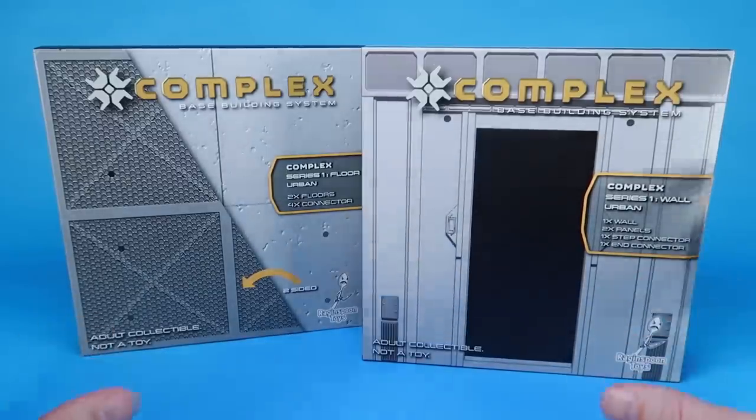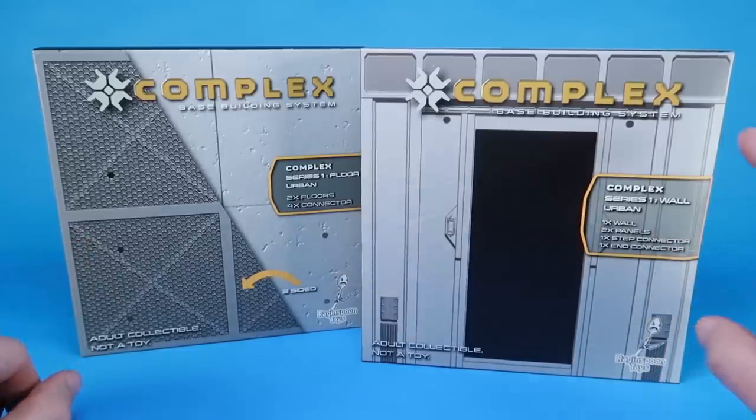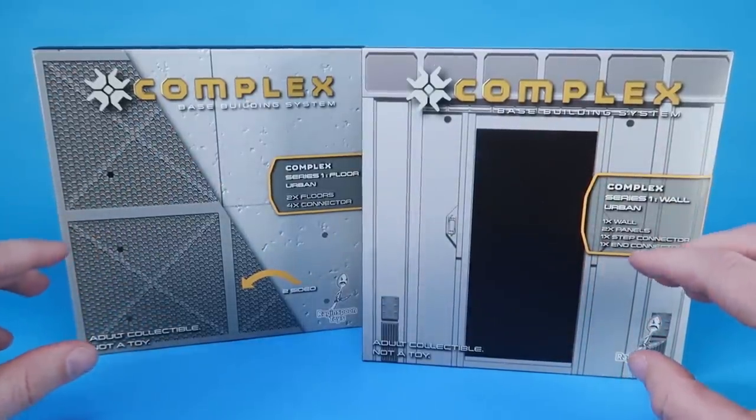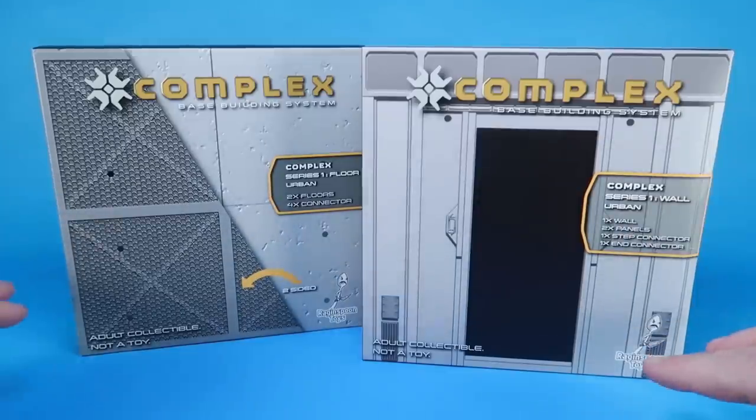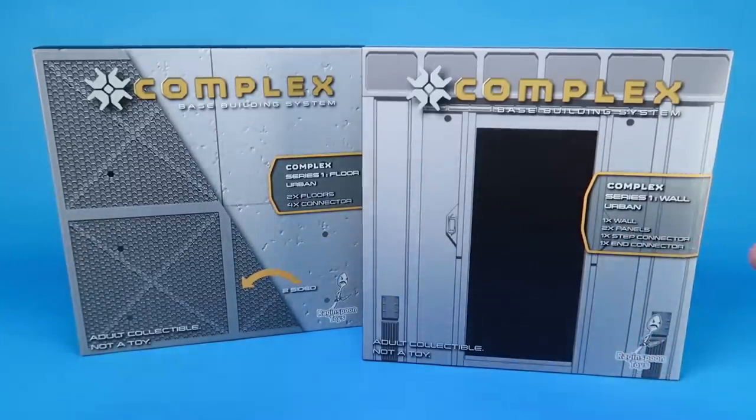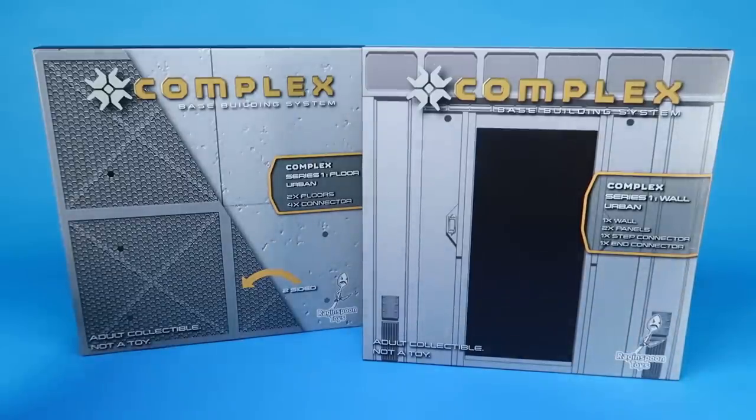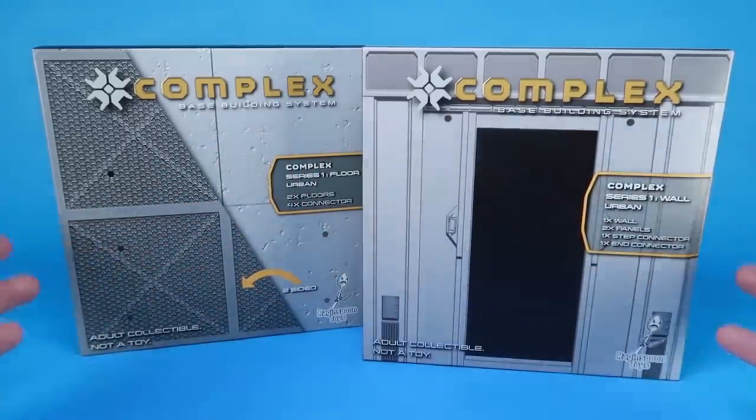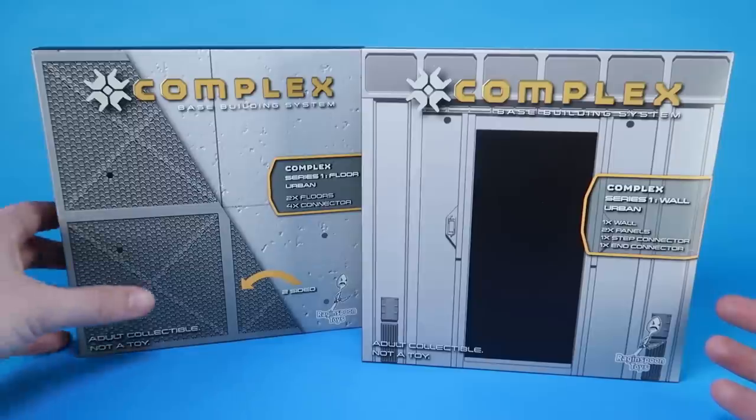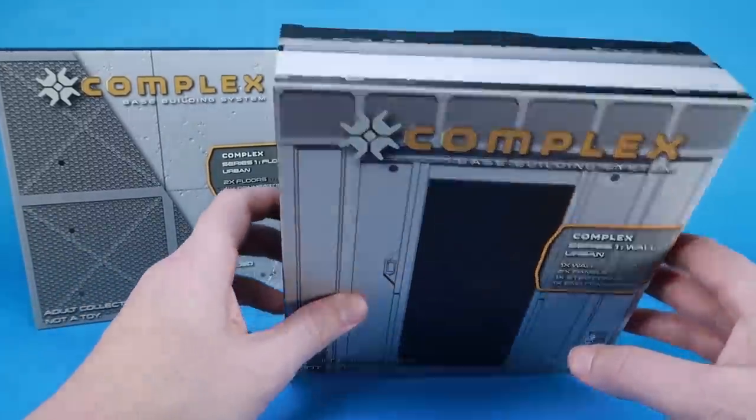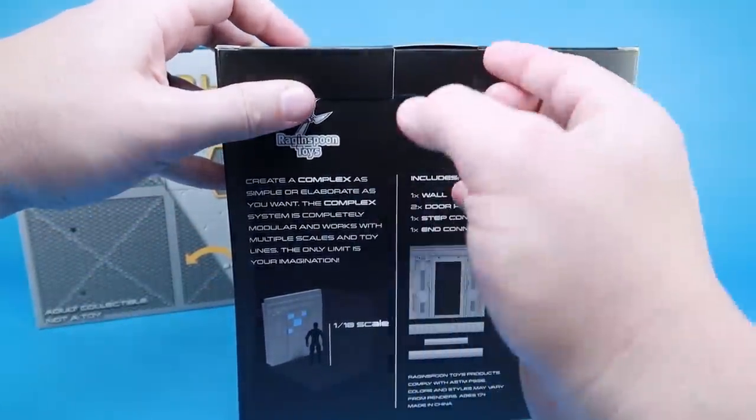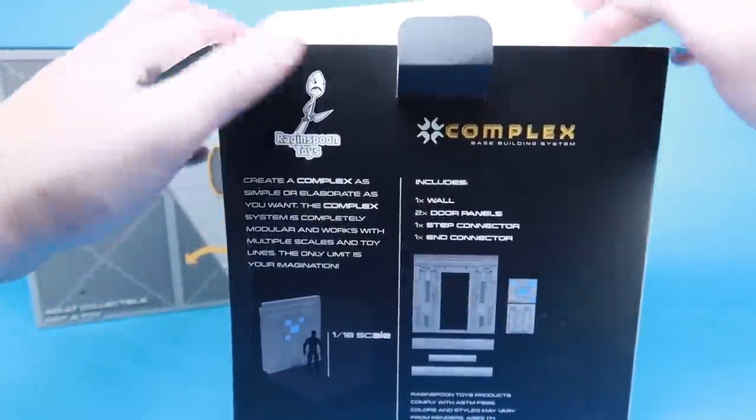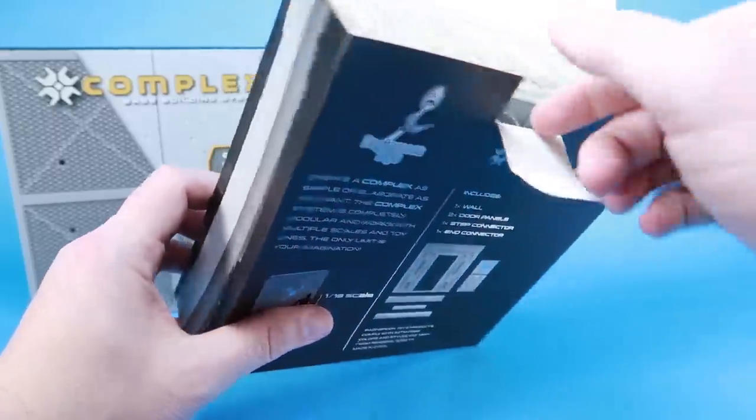What we've got here in front of us today are the Series 1 sets - this is the Wall Series and the Floor Series. These are the urban ones; I believe there are also some tan ones, but these are going to be kind of more the gray color palette, like an urban warehouse or building type setting. This is a fully connectable base building system that allows you to build up cool dioramas specifically for your three and three-quarter inch sized action figures. Even more specifically than that, these are absolutely made with GI Joe in mind - your three and three-quarter inch or four inch GI Joe figures.